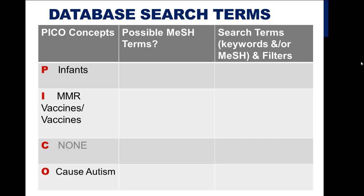This is an example of the way to think about a PICO question. The left-hand column displays the main concepts. In the center column, I would look to see if there are medical subject headings appropriate to use for those terms that might strengthen the search. And then in the right-hand column, I would write down after some experimentation what I would decide to search in the database, whether it be a keyword, a MeSH term, or a combination of both.